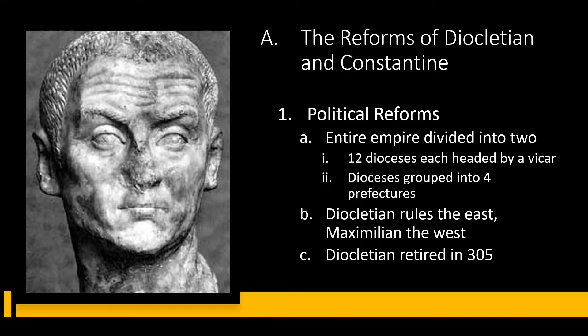Each would be divided into twelve dioceses, each headed by a vicar, and each diocese grouped with four prefectures. Diocletian took the east due to its wealth. His Caesar was Galerius, and in the west Maximian was Augustus and his Caesar was Constantius. Each Caesar would marry the daughter of an Augustus to ensure a smooth succession. The emperor was exalted. Diocletian retired to his farm in AD 305 and the Senate was reduced to the power of a city council. New titles were introduced — illustrius and illustrissi.